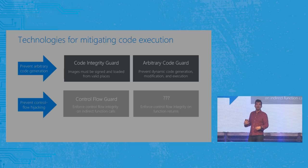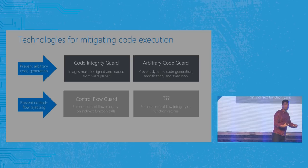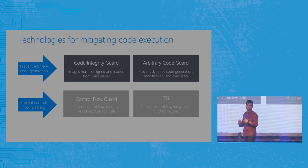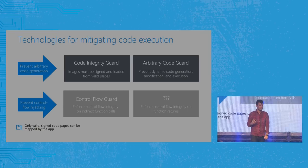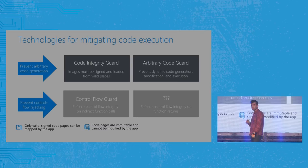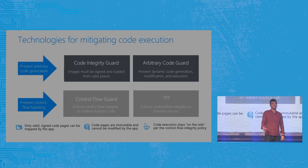We have a gap that exists for rear-edge control flow integrity — stack returns, etc. With these four pillars in place we get three important security properties: only valid code can be run by an app; that code is immutable and can't be changed at runtime or generated dynamically; and the code that does execute runs in the way we expected. That's pretty powerful if we can enforce it.